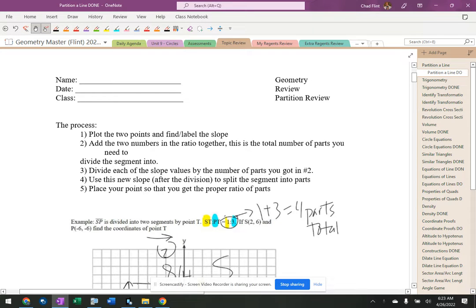We want to plot the points, we want to add the two numbers together in the ratio, that's how many parts you're supposed to split the segment into.